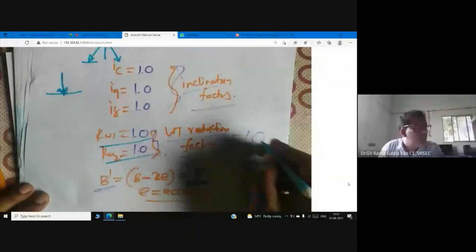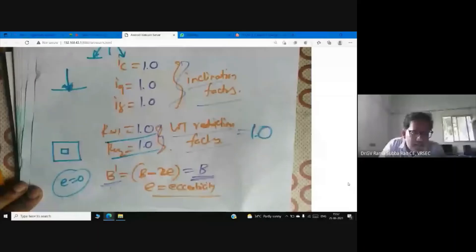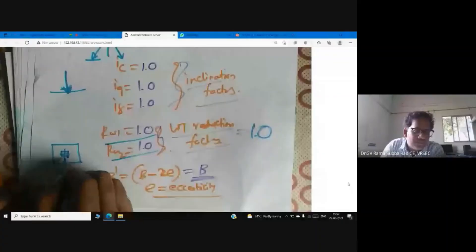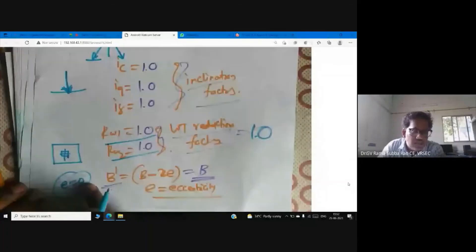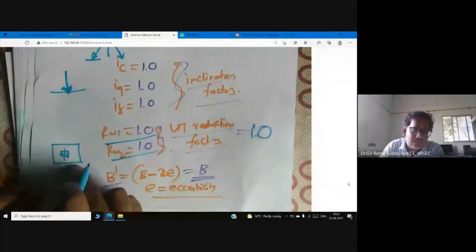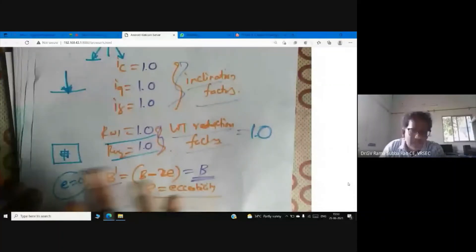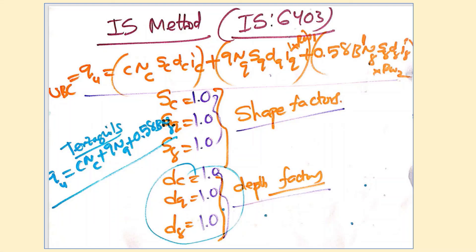How can you say eccentricity? Here, you see, this is the base of the footing and this is the column. The centre of gravity of the base of the footing coincides with the centre of gravity of the column. There is no eccentricity — eccentricity is zero. So the load is concentric, not eccentric. Once eccentricity is zero, B-dash is equal to B, and you can see this simplified equation.